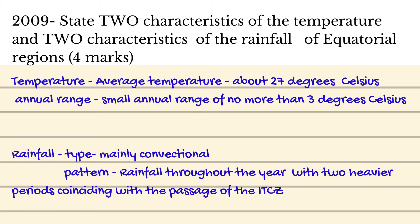When it comes to rainfall, you could talk about the total amount for the year, which usually is about 2000 or more millimeters. You could talk about the type of rainfall, which is convectional rainfall. You could also talk about the rainfall pattern — that rainfall occurs throughout the year and is well distributed, but that there may be two heavier periods of rainfall which coincide with the passage of the ITCZ.